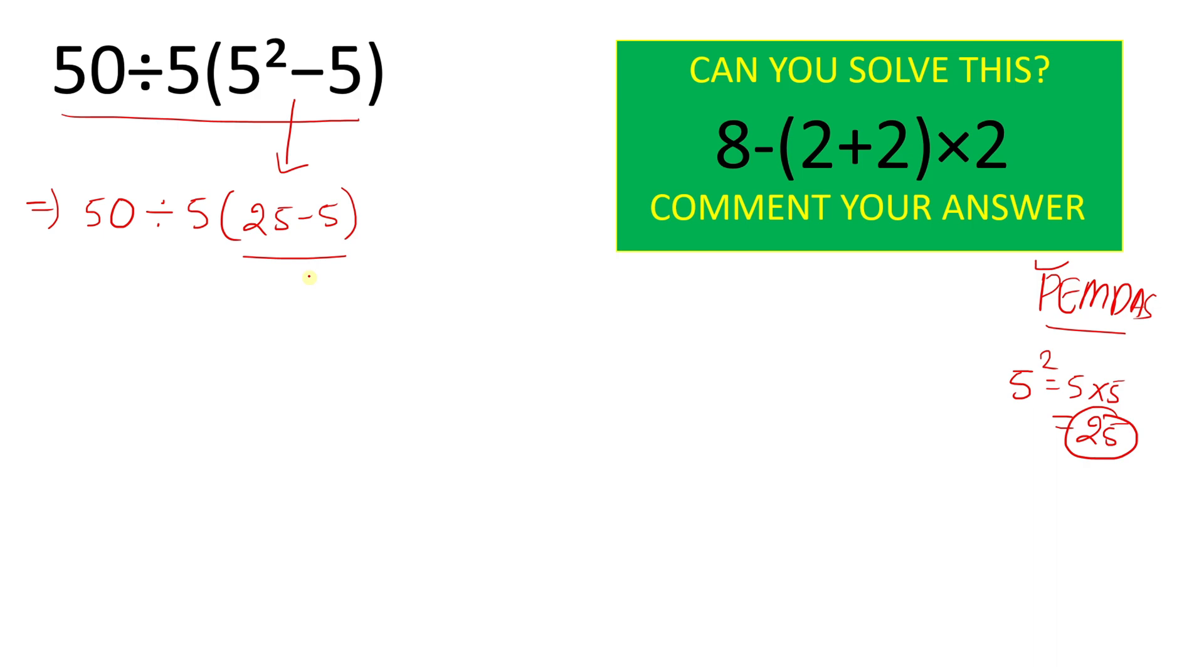Now we will do subtraction operation inside the parenthesis. And when we subtract 25 minus 5 we will get 20 as a result. So we write 50 divided by 5 times 20.